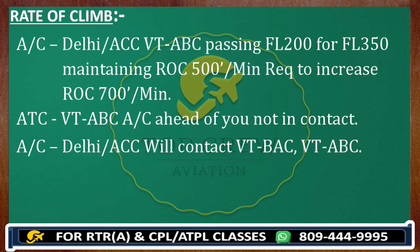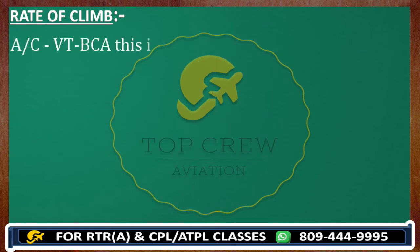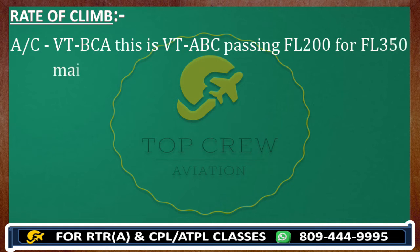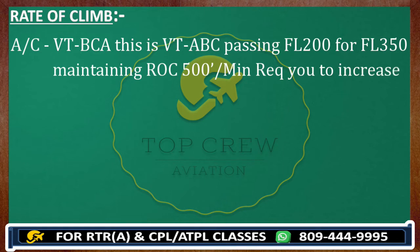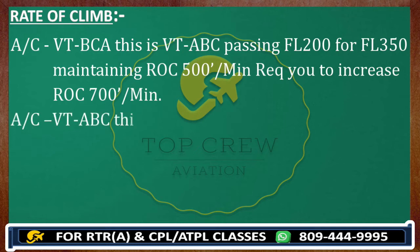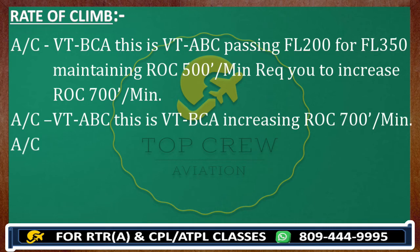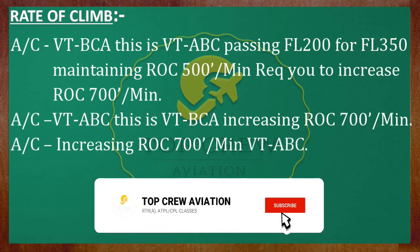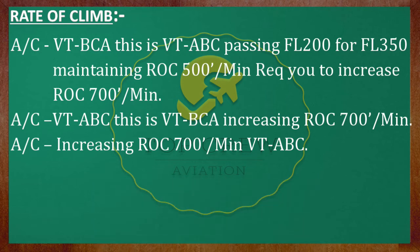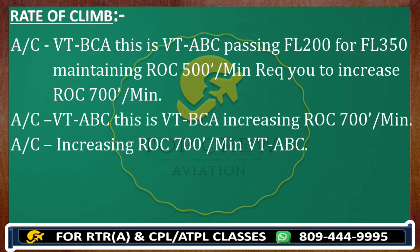Now you call the aircraft directly: Victor Tango Bravo Alpha Charlie, this is Victor Tango Alpha Bravo Charlie, passing flight level 200 for flight level 350, maintaining rate of climb 500 feet per minute, request you to increase rate of climb 700 feet per minute. The aircraft responds: Victor Tango Alpha Bravo Charlie, this is Victor Tango Bravo Charlie Alpha, increasing rate of climb 700 feet. You then read back: Increasing rate of climb 700 feet per minute, Victor Tango Bravo Charlie. This is how you get the clearance.